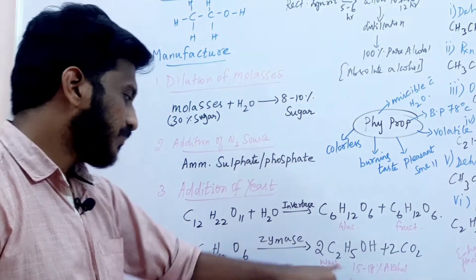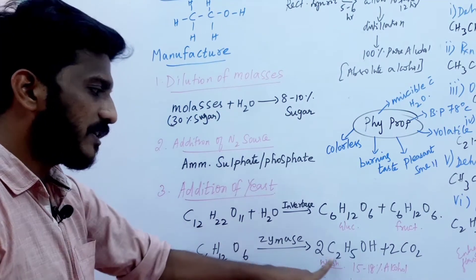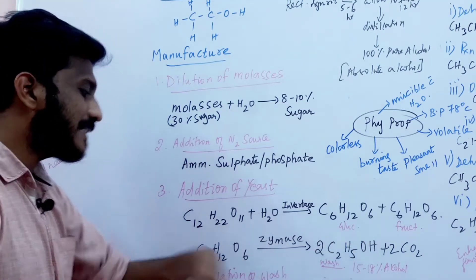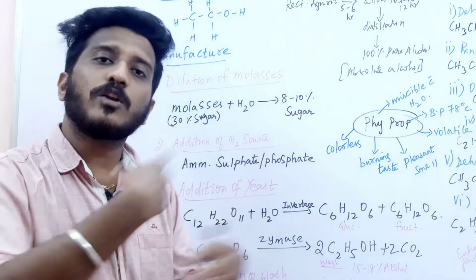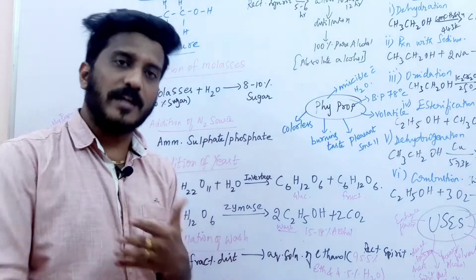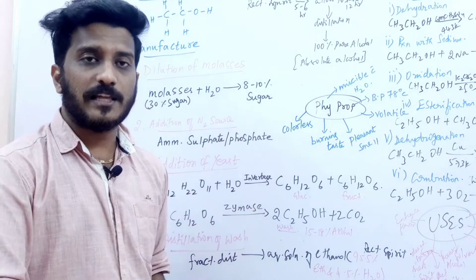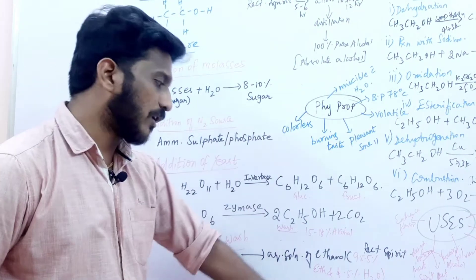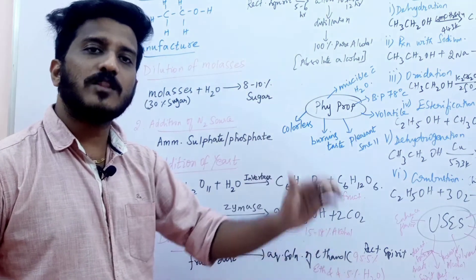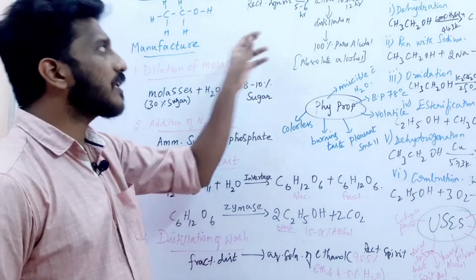The resulting wash contains about 15 to 18% alcohol. This is then purified by fractional distillation — repeated boiling and condensation. When you carry out fractional distillation, you get an aqueous solution of ethanol that is 95.5% ethanol and 4.5% water. This is called Rectified Spirit.